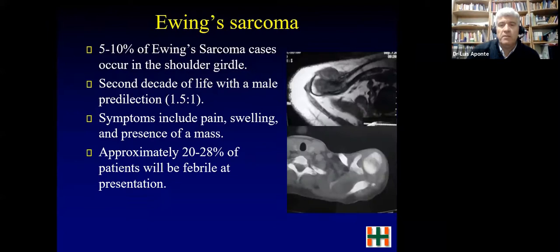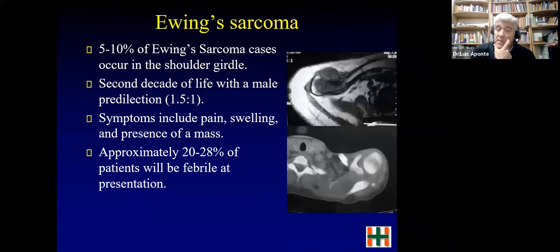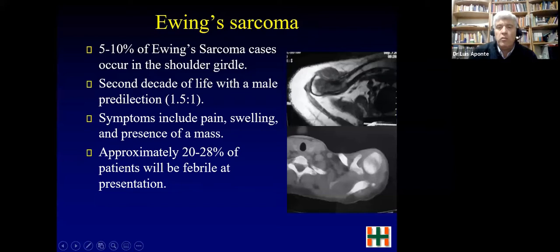Ewing sarcoma accounts for about 5–10% of cases around the shoulder. The numbers are small compared to osteosarcoma. There is a male predilection. Patients present with pain, swelling, and a palpable mass, but importantly, about one-third of patients also have fever and laboratory abnormalities. You must think of Ewing sarcoma if there is a mass in the clavicle or scapula.